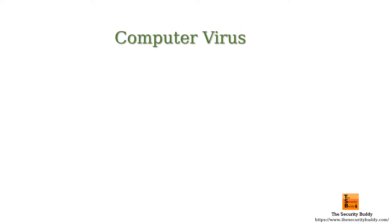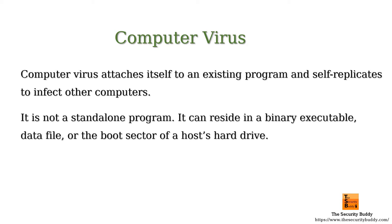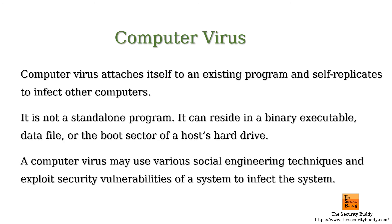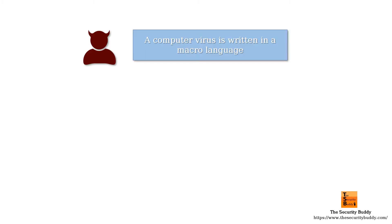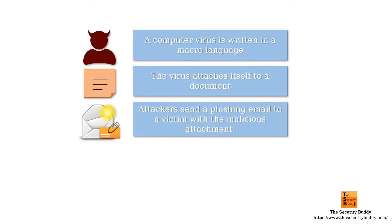A computer virus, on the other hand, attaches itself to an existing program and self-replicates to infect other computers. It is not a standalone program — it can reside in a binary executable, data file, or the boot sector of a host hard drive. A computer virus may use various social engineering techniques and exploit security vulnerabilities. For example, a virus can be written in a macro language, attach itself to a document, and spread via a phishing email with a malicious attachment.